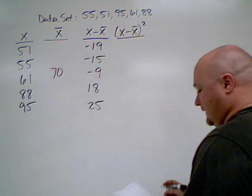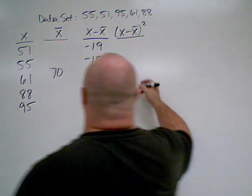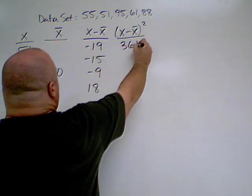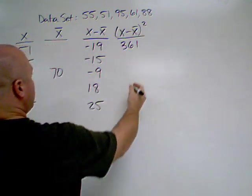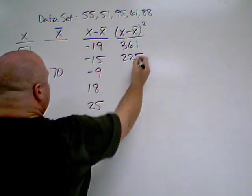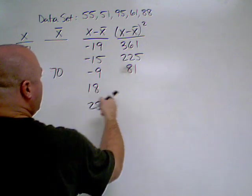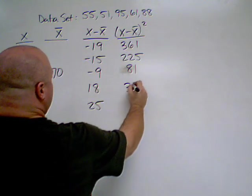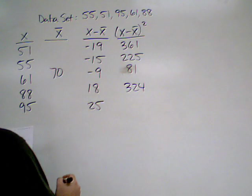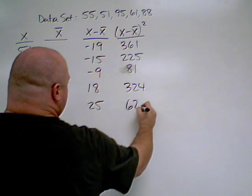Now, I've already done the work on this. So, negative 19 squared is actually 361. 15 squared is 225. 9 squared, of course, is 81. 18 squared is 324. And 25 squared is 625.